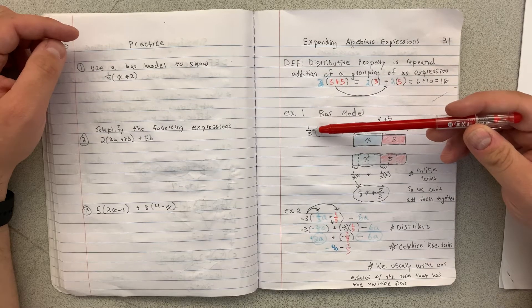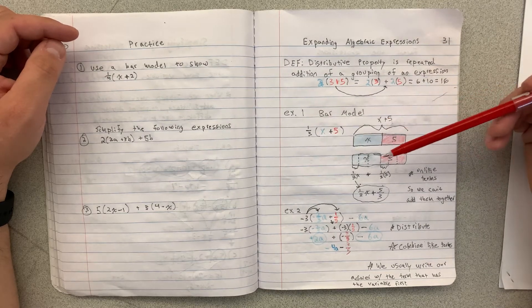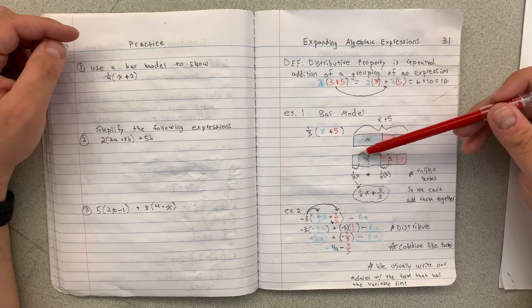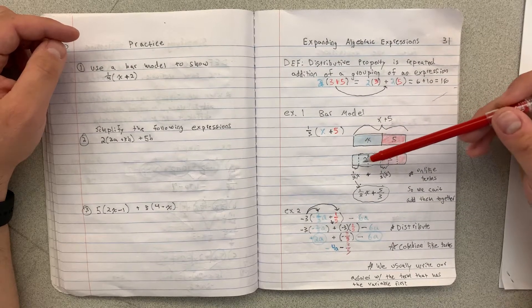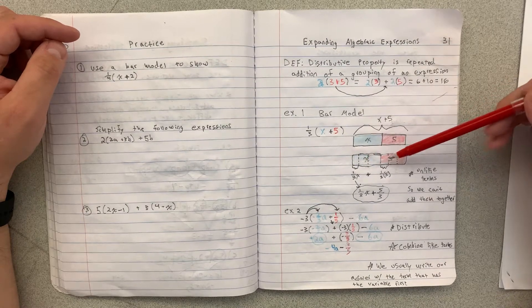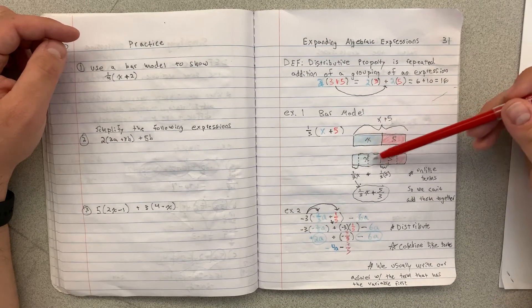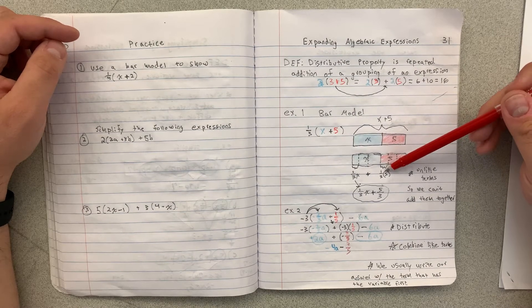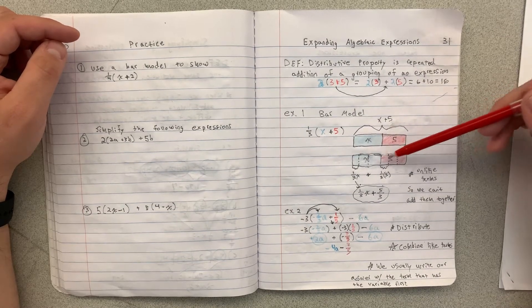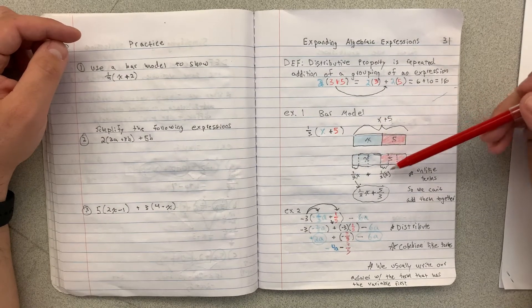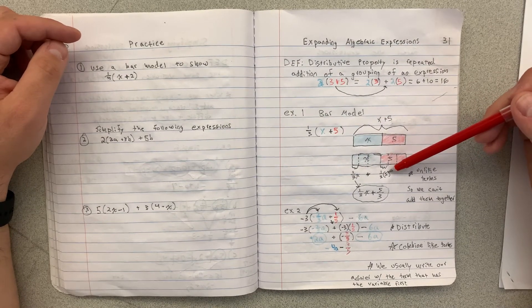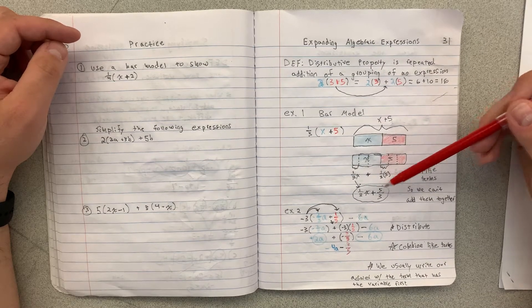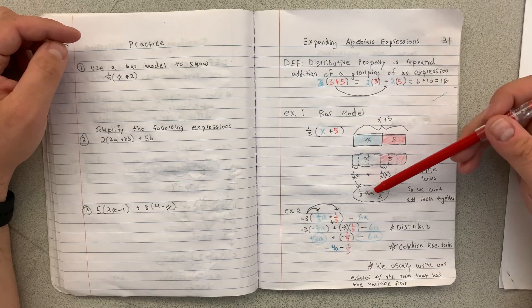If I'm multiplying this by 1 third, that means I'm really cutting it into thirds. So I'm cutting each of these bars into thirds and only a third of them is what I'm keeping. So 1 third of x and then 1 third of 5. Now these are not like terms, so I can't combine them together. But I can do 1 third times 5 to get 5 thirds. So that would be my answer for that one: 1 third x plus 5 thirds.